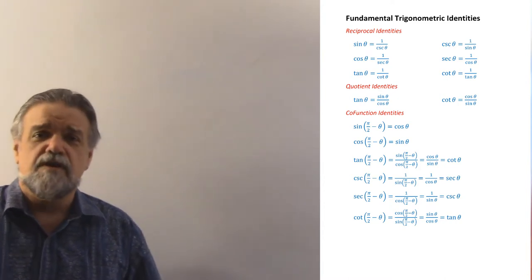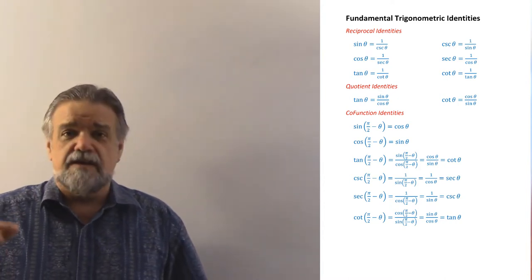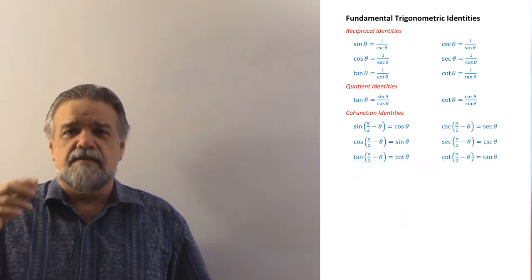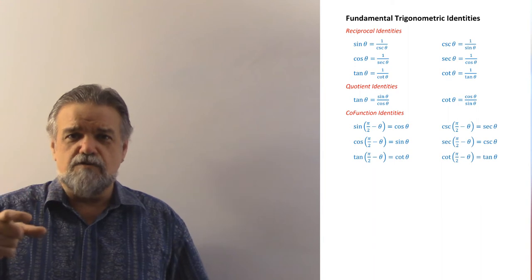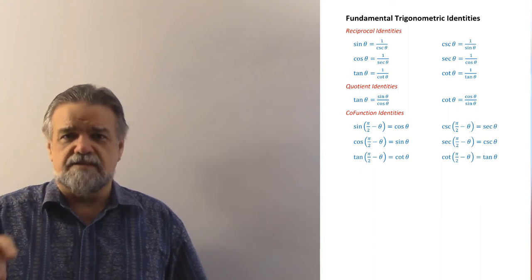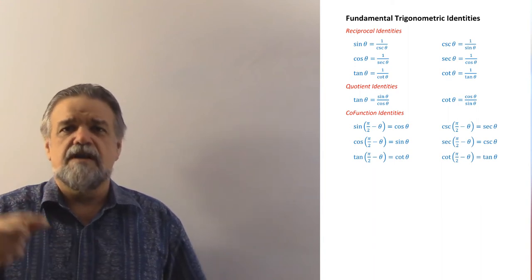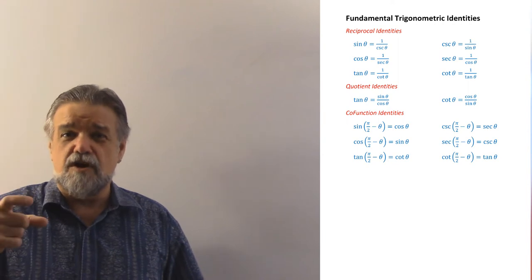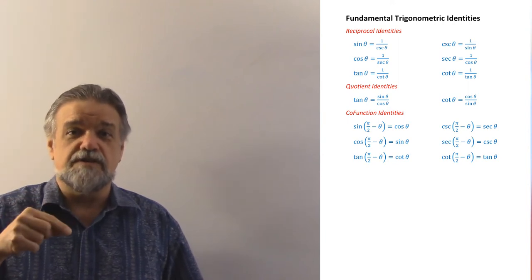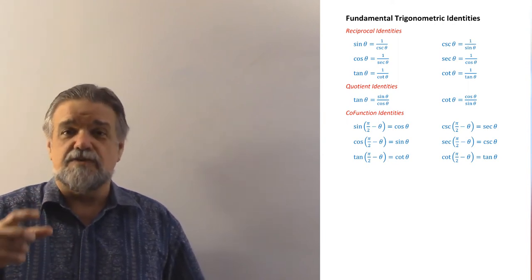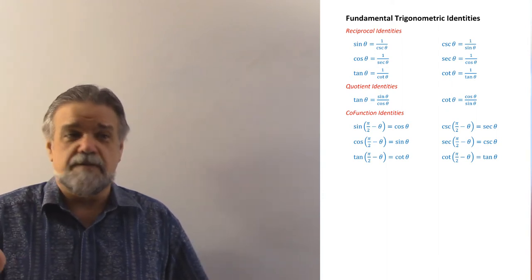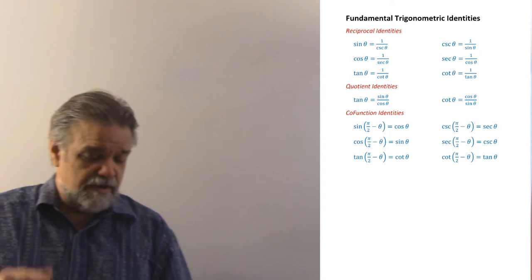What I want you to notice is the 'co' in co-function. The cosine of theta is the sine of the complement of theta, and the cotangent of theta is the tangent of the complement of theta. The 'co' in cosine, cotangent, and cosecant actually stands for complement — that's where the word comes from.